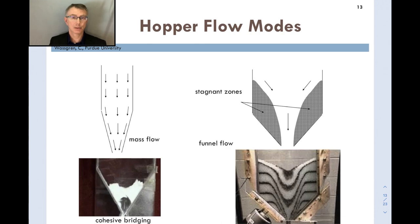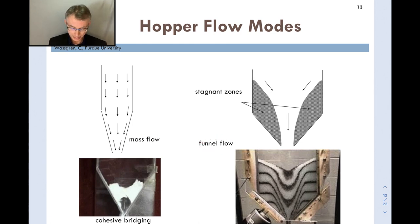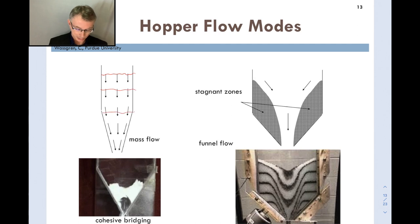When the hopper discharges, what does the flow pattern look like? The two most common hopper flow modes are mass flow and funnel flow. In mass flow (shown on the left), all of the material flows simultaneously when the exit is opened — there are no stagnant regions. The free surface of the material stays more or less level as it discharges. This is what most people want when discharging a hopper.